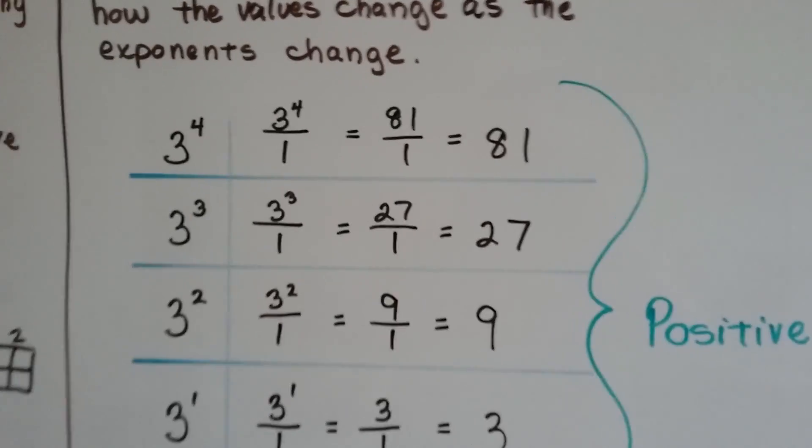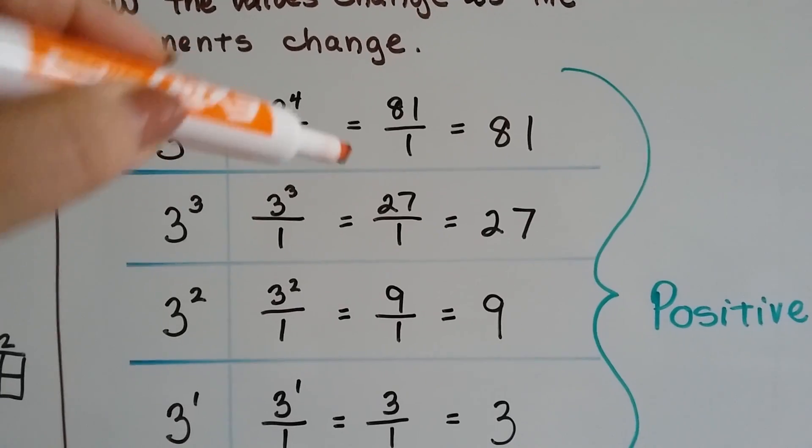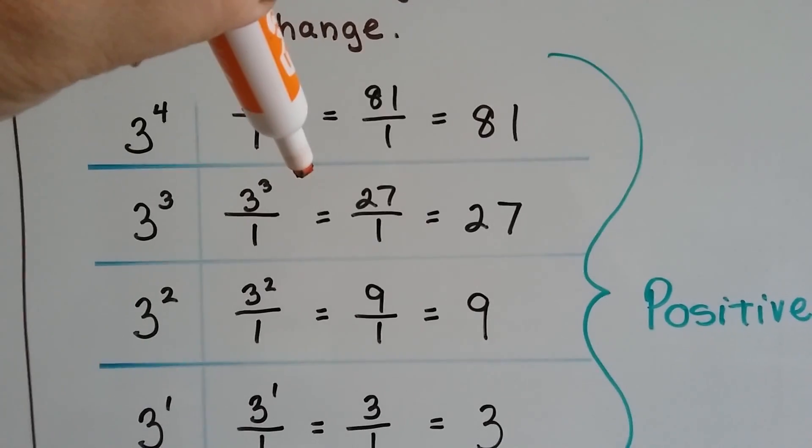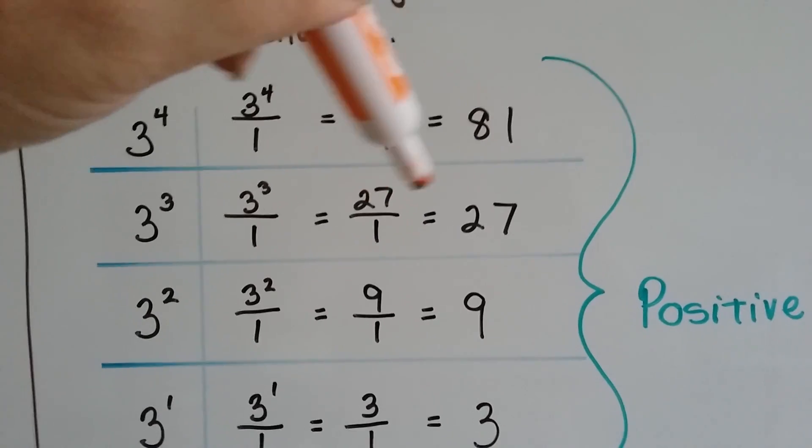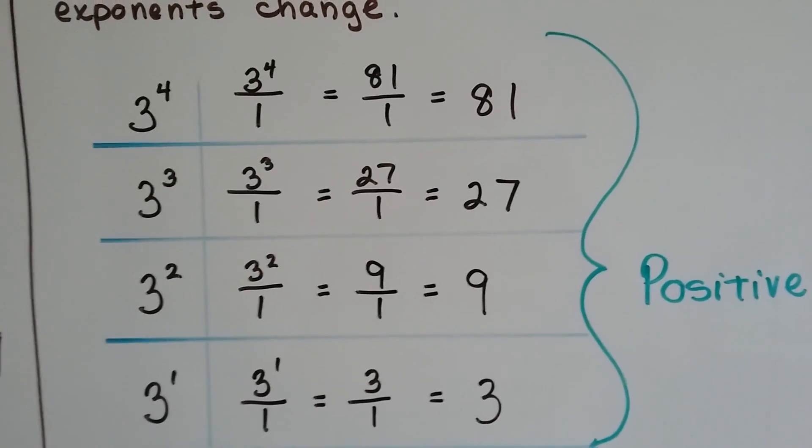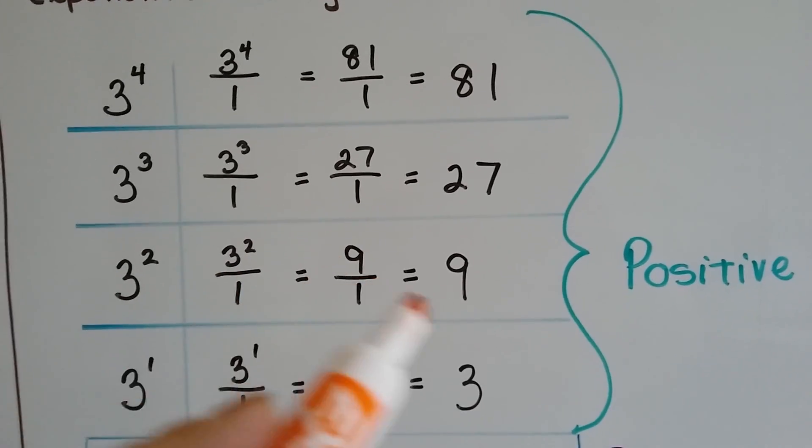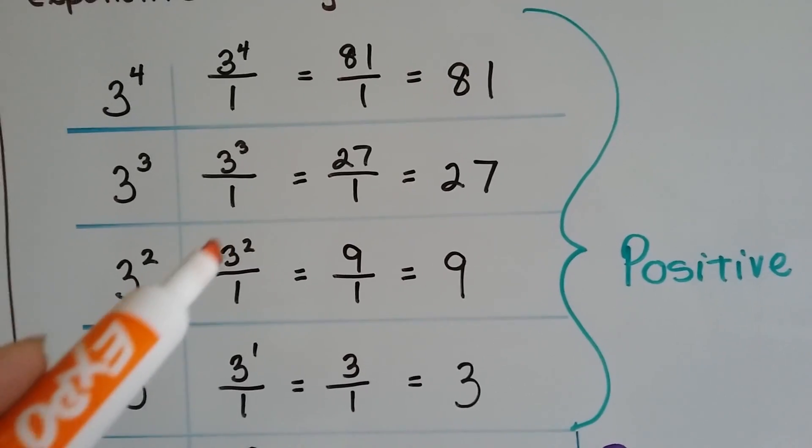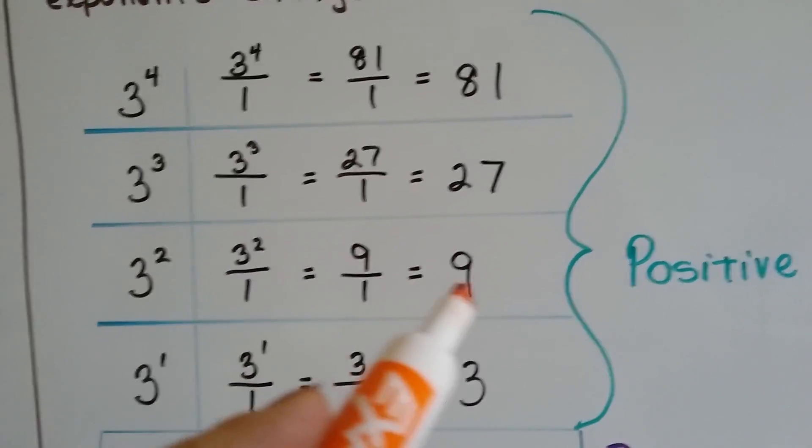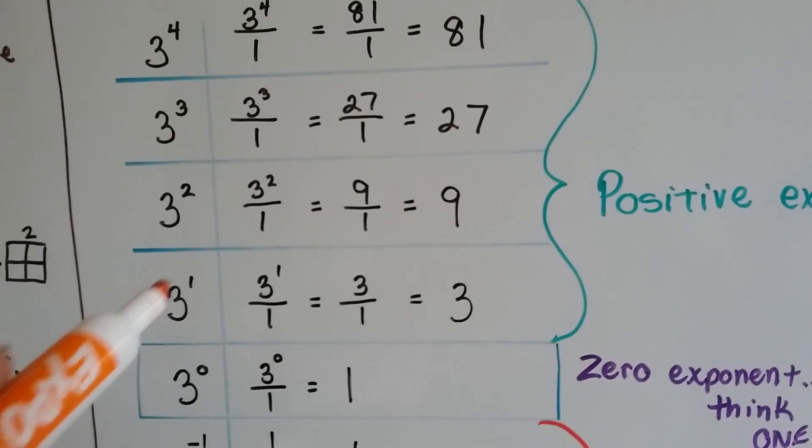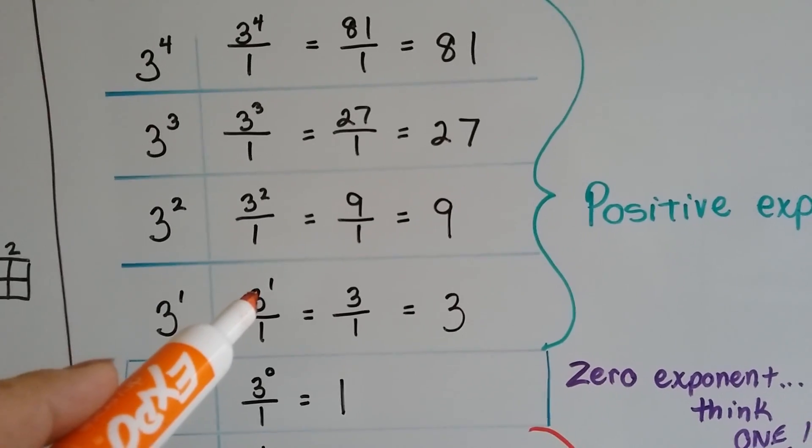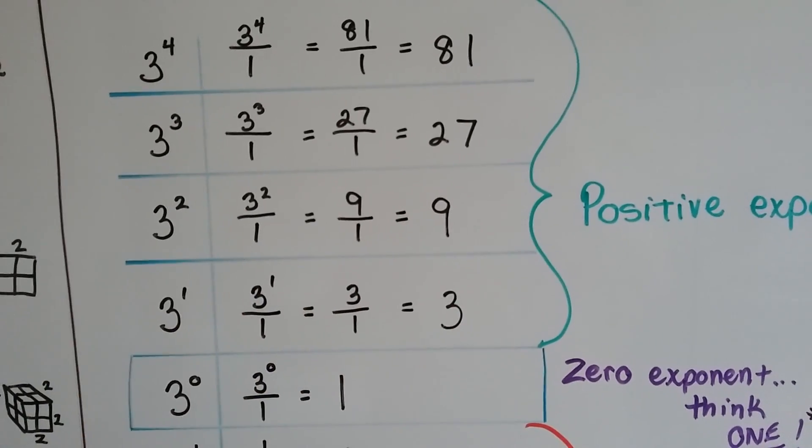So, 3 to the third power is 27, because 3 times 3 is 9, and 9 times 3 is 27. It equals 27 as a whole number. It's positive. 3 to the second power is 9. It's like 3 to the second power over 1. It equals 9. 3 to the first power, that's just 3. So, it equals 3.